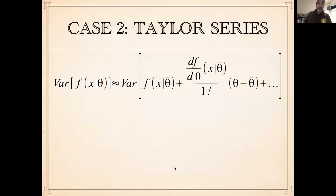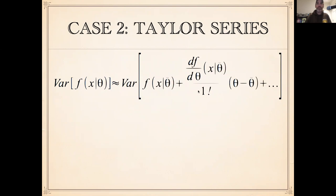We're going to rely on a pretty common trick in math: the idea of a Taylor series — essentially linearizing a nonlinear model, taking a linear approximation to that nonlinear model. So we say that the variance of a function is approximately equal to the variance of the linear approximation of that function, which comes from the first two terms of a Taylor series. The first term is the function evaluated at the mean value of the inputs, and the second term involves the slope — the sensitivity of our function to our inputs at the mean value — times the difference between the parameter value and its mean. This comes from the Taylor series many of us learned in calculus, which shows we can approximate any smooth function with a series of polynomials.